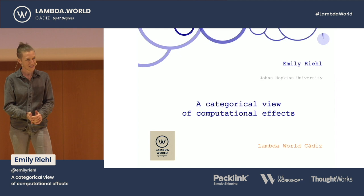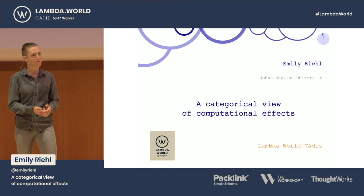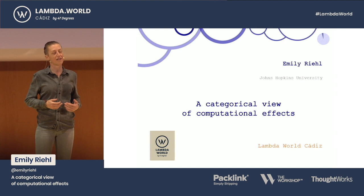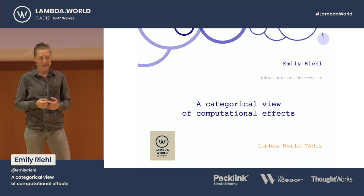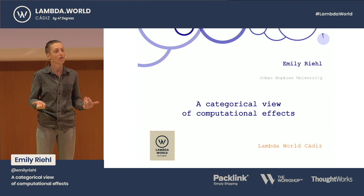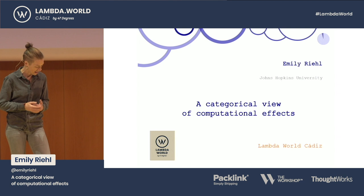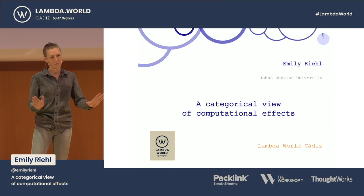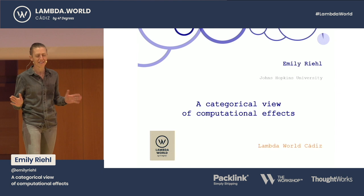This goes back to the PhD thesis of Eugenio Moggi, and then follow-up work by Gordon Plotkin, John Power, Martin Hyland, and many, many others. This is telling the story of the interaction between category theory and computational effects. Two-thirds of this talk is directed at people who have never heard this story before, whilst the other two-thirds are directed at people who feel like they know this story very well, because there's going to be a twist at the end. And I realize two-thirds and two-thirds don't add to one — that was a deliberate calculation.